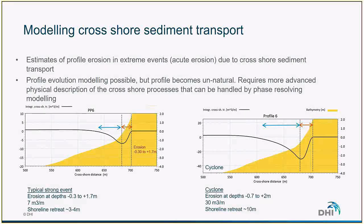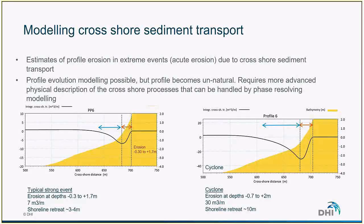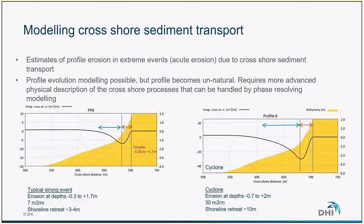We still have some relatively simple tools to estimate profile erosion during extreme events. As shown in the bottom pictures, we've simulated cross-shore sediment transport for a specific typical strong event, and also for a typical cyclone event. This model indicates where the profile is going to erode and where sand will accumulate. It is a useful tool for designing artificial beaches, for instance, to see what the natural variation of the cross-shore profile would be.